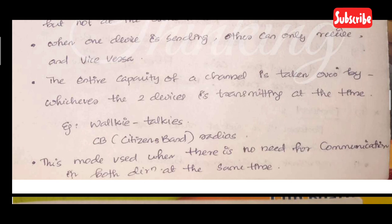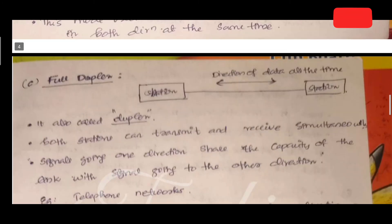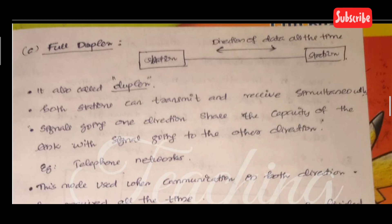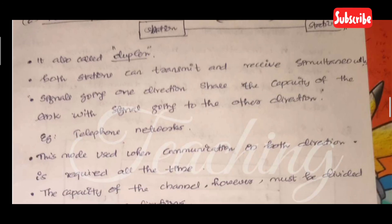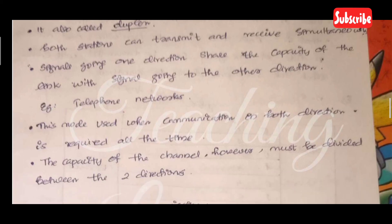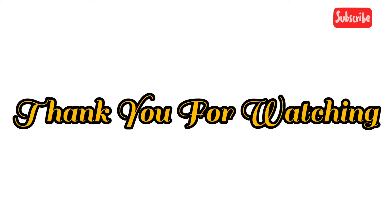The third mode is full duplex communication, also called duplex. It is a bidirectional communication mode — both stations can transmit and receive simultaneously. Signals going in one direction share the capacity of the link with signals going in the other direction. An example is telephone networks. This mode is used when communication in both directions is required all the time, with the channel capacity divided between the two directions.